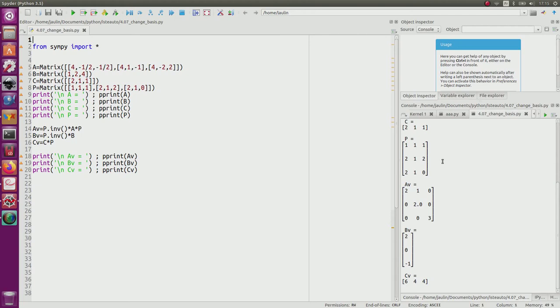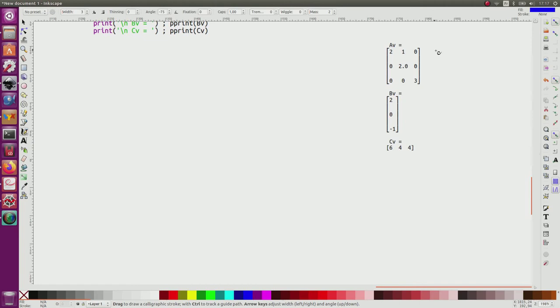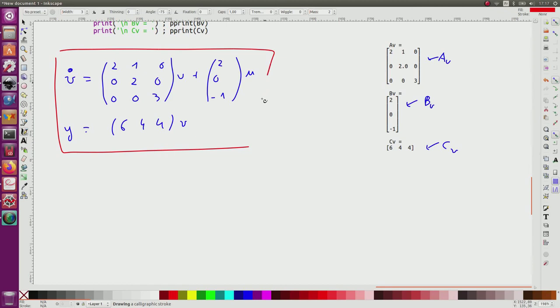And I can see my matrices P, A, B, C, V. As a consequence, in the state space V, I have V dot equal: 2, 1, 0; 0, 2, 0; 0, 0, 3, times V plus 2, 0, minus 1, times U. So Y equal to 6, 4, 4 times V. This is my system with output Y and input U.